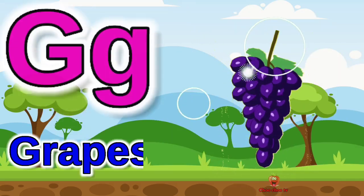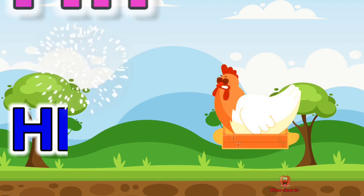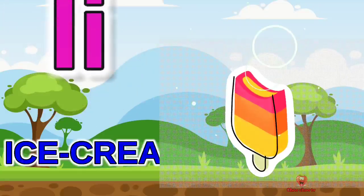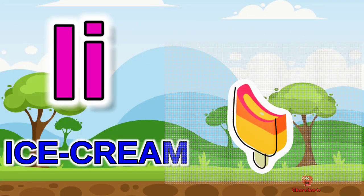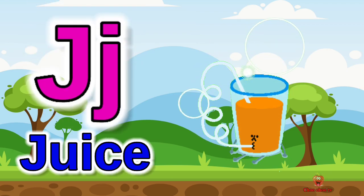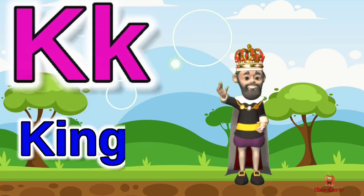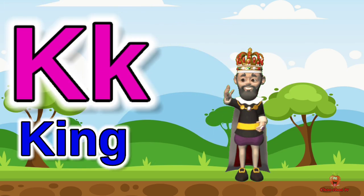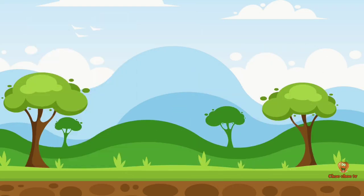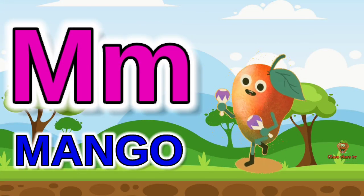G for grapes, H for hen, I for ice cream, J for juice, K for king, L for lamb.